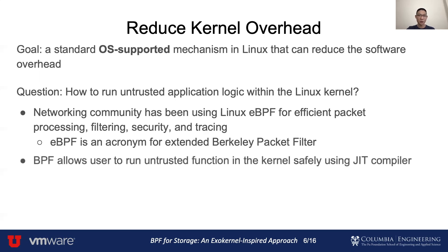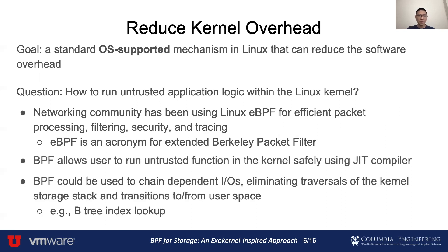BPF allows users to run untrusted functions in the kernel safely using a just-in-time compiler. Therefore, BPF could be used to chain dependent IO requests, eliminating the traversal of the kernel storage stack and transitions between user space and kernel space. For example, it can be used to perform B-tree index lookup, which we will be focused on for the rest of the presentation.